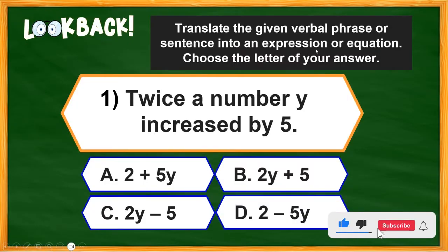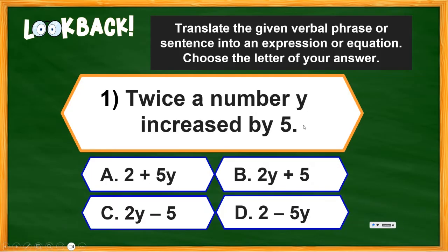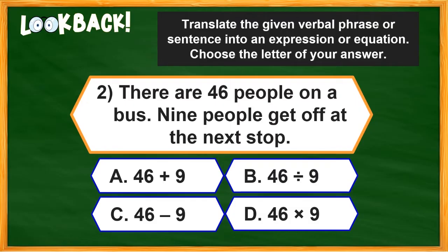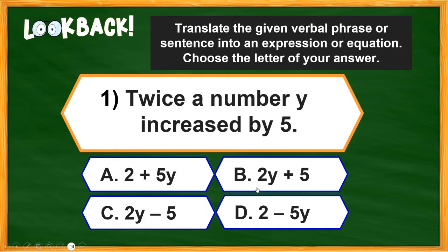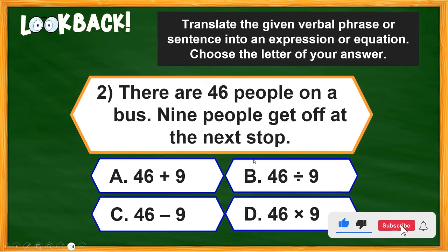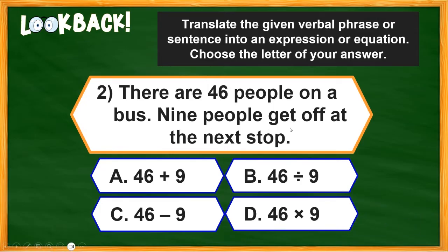Let's look back. Translate the given verbal phrases or sentences into expressions or equations — choose the letter of your answer. Number one: 'Twice a number Y increased by five.' Is it A, B, C, or D? Comment down your answer. Number two: 'There are 46 people on a bus; nine people get up at the next stop.' What should be the proper translation of this situation — A, B, C, or D?